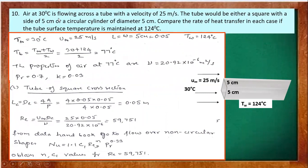In the second problem, air at 30°C flows across a tube at 25 m/s. The tube is either a square with a 5 cm side or a circular cylinder of 5 cm diameter. We compare the heat transfer rate for each case when the tube surface temperature is 124°C. First, find the bulk temperature and obtain air properties.